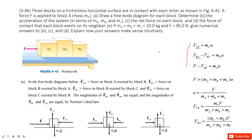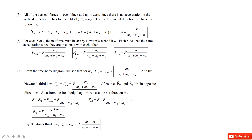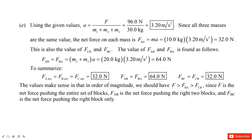The next part gives you the masses as equal and the external force F as 96 newtons. It asks for the numerical answers for parts b, c, and d. We apply our earlier equations for the acceleration, net force, and contact force by substituting the numbers. The net force on each object is the same, and the contact force for AB is larger than the contact force between BC.